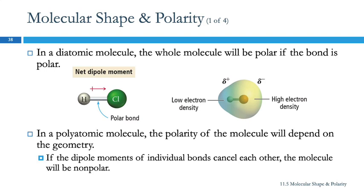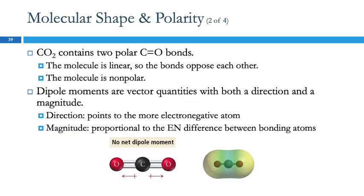If we have a more complicated molecule than just two atoms, things get more complicated. The polarity of the whole molecule depends on the geometry and the kinds of bonds. Let's look at carbon dioxide — carbon in the middle, oxygen on each side, no lone pairs on carbon, two electron groups — this is a linear molecule from VSEPR theory.